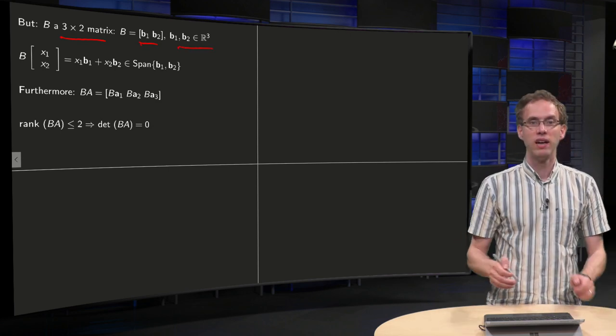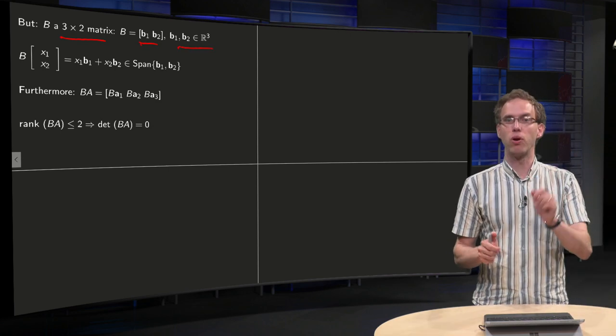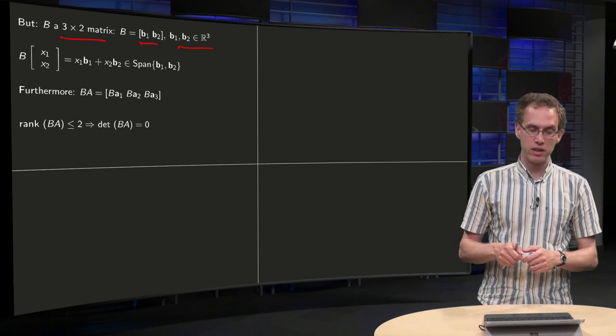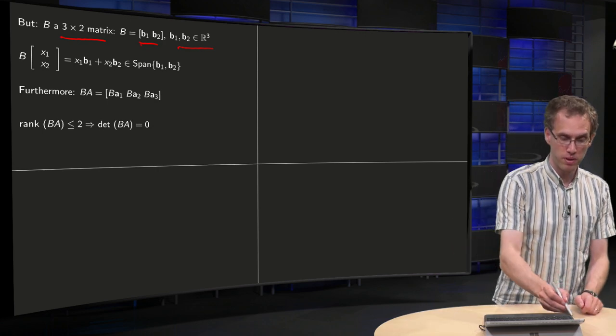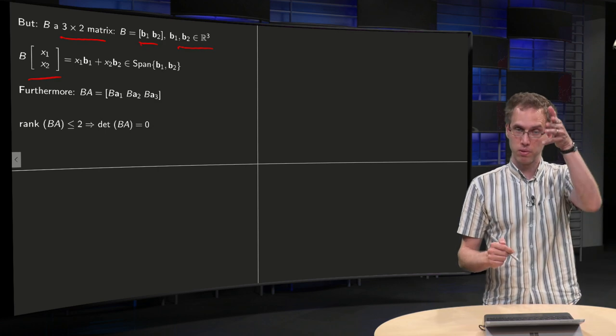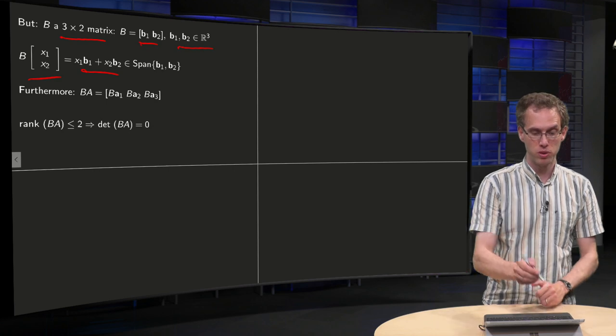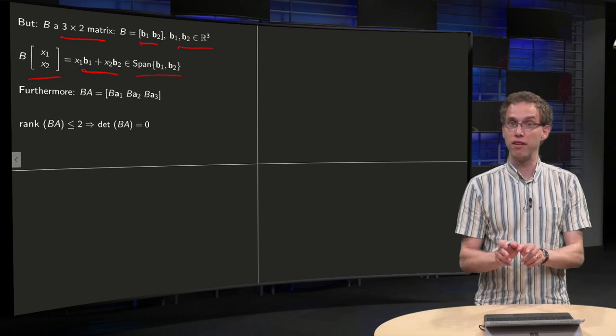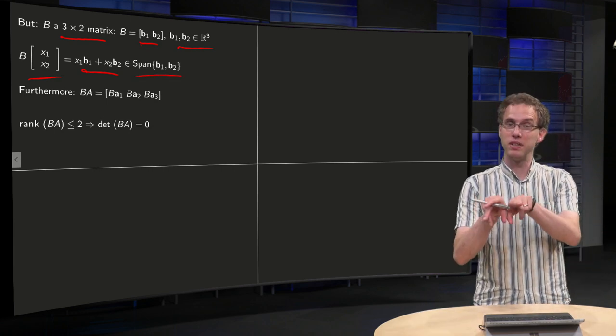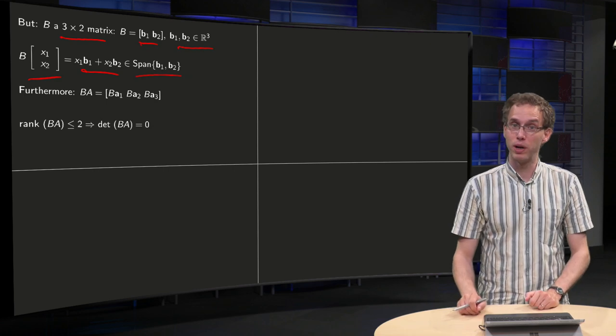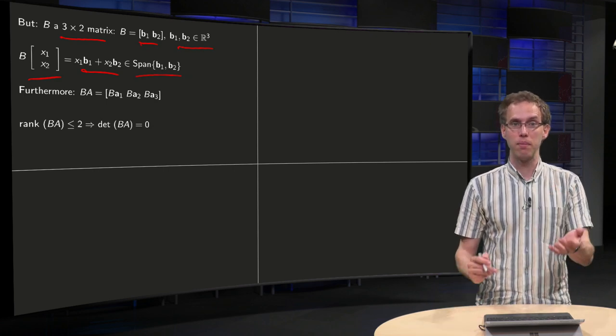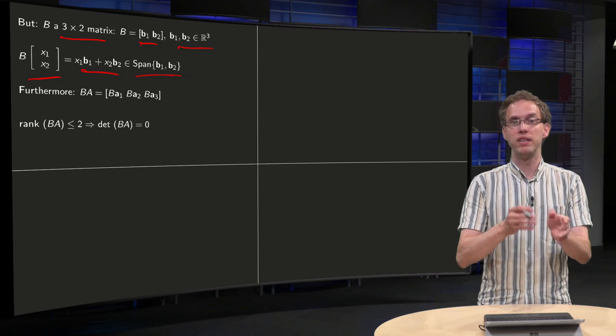both in R³. And let's assume for a moment that those two columns are independent. So that means if we compute B times a vector containing x1 and x2, we get x1 times B1 plus x2 times B2, which is an element in span of B1 and B2, which is an element in the plane spanned by B1 and B2.